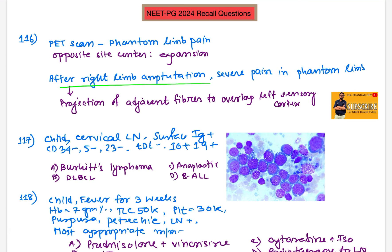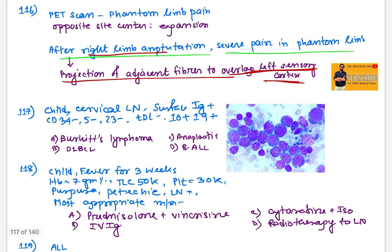Question 116: A patient with right limb amputation having severe pain in the phantom limb. Mechanism - yes, the projection of adjacent fiber to opposite cortex. Here right limb amputation, so the projection will be left sensory cortex. A projection of adjacent fiber into left sensory cortex.